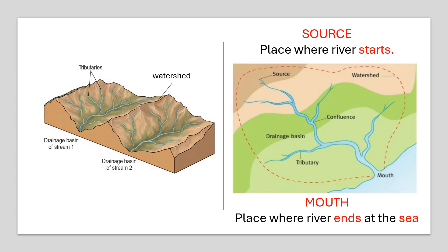The place where a river starts is called its source, and that is often high up in mountainous areas. The place where the river ends — emptying out into the sea or into a lake — is called the river mouth. So the river starts at the source and ends at the river mouth.